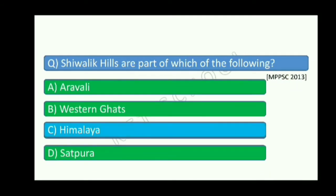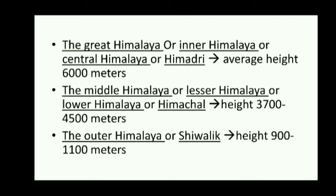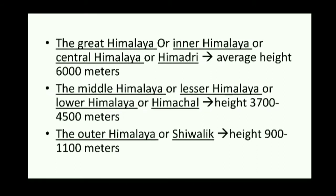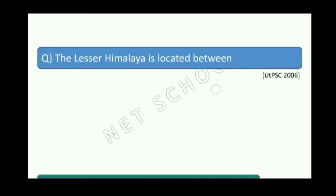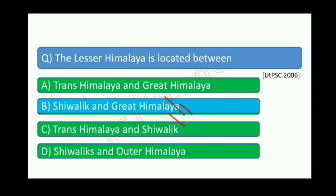Himachal stands for the Middle Himalaya. We have the Great Himalaya, which is the inner Himalaya, also called Himadri, with an average height of 6000 meters. The Middle Himalaya — the lesser or lower Himalaya or Himachal — is at 3700 to 4500 meters. The outer Himalaya — Shivalik — is at 900 to 1100 meters. The Lesser Himalaya is located between the Greater Himalaya and the Shivalik.